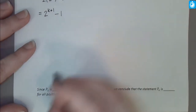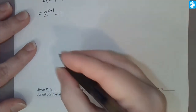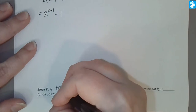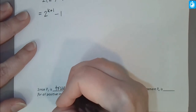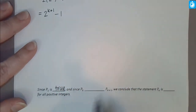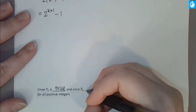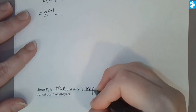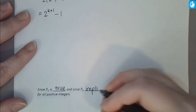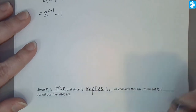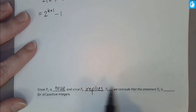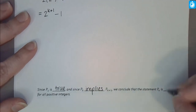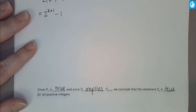That verifies the relationship. The statement was true when n equals 1 and the assumption of P sub k implies P sub k plus 1, so we conclude the statement is true for all positive integers.